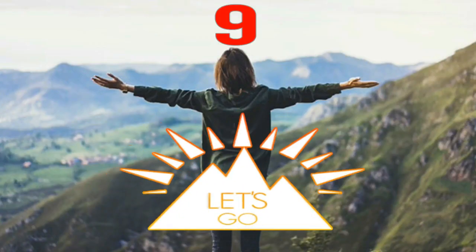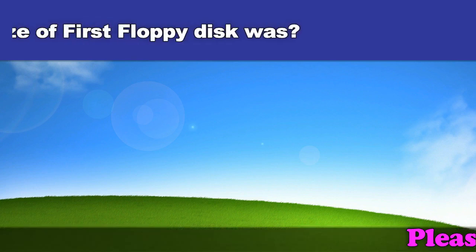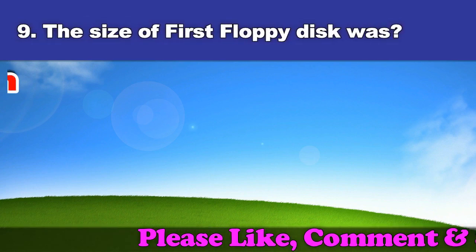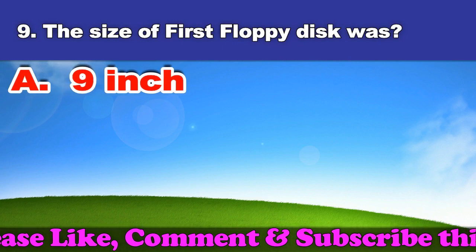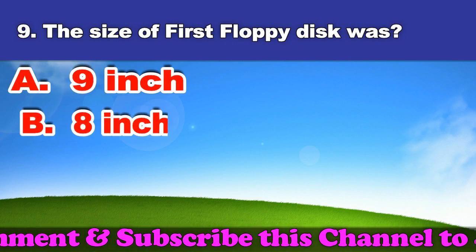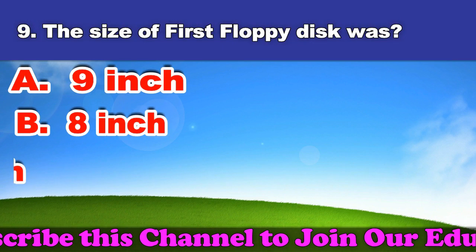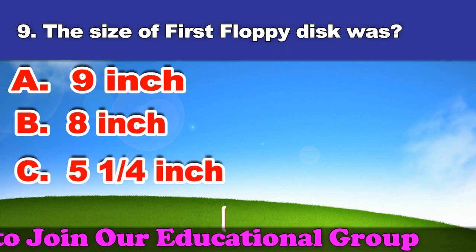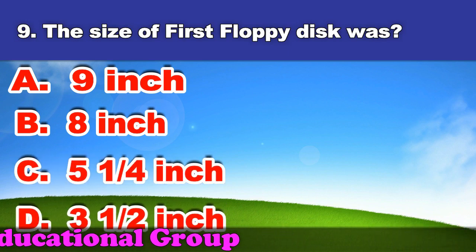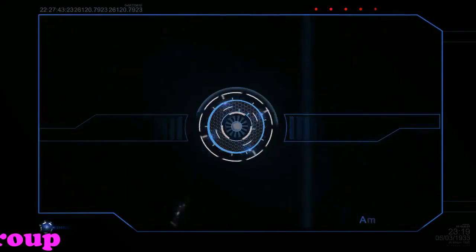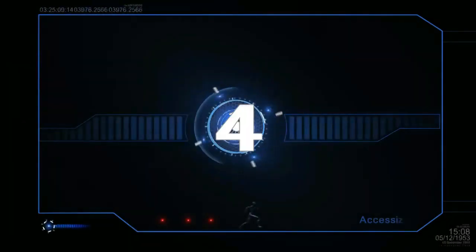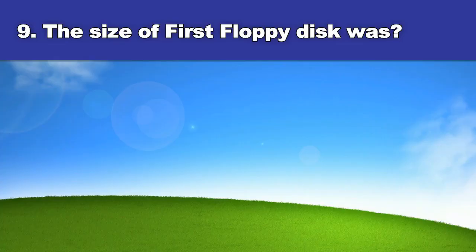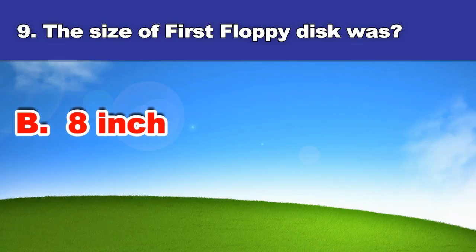Ninth question: The size of the first floppy disk was? A. Nine inch. B. Eight inch. C. Five and a quarter inch. D. Three and a half inch. And the answer is eight inch.